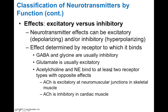Acetylcholine and norepinephrine bind to different receptor types and actually have different effects. Acetylcholine is excitatory at the neuromuscular junction but inhibitory in cardiac muscle. What makes the same neurotransmitter have different effects is that at the neuromuscular junction acetylcholine binds to nicotinic receptors, while in cardiac muscle it binds to muscarinic receptors, and these receptors have different effects on those target cells.